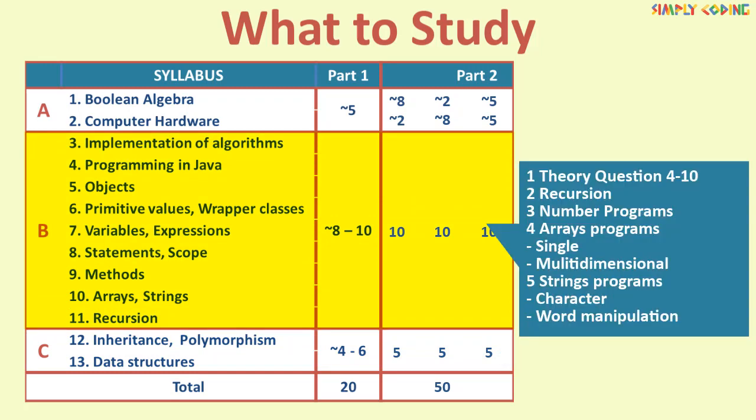Next to study is section B. For part 1, do short theory questions from all of these topics. One question is expected on recursion which is mostly a reverse question where program is given and they check whether you understand it and can predict the output. In part 2, start with number programs. Practice all different type of number programs like perfect number, neon number, Armstrong number etc. Then do array programs, both single and multi-dimensional. Then there are some string programs. They are typically with some character and word manipulation.